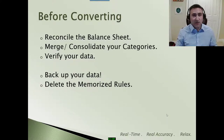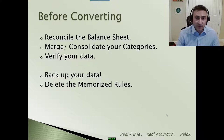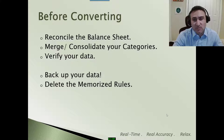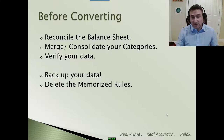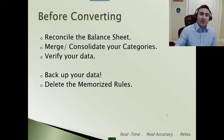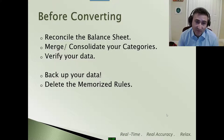If you are going to convert, and if you are one of those individuals or businesses that it does make sense for, here are a few things you should do before converting. First, reconcile your balance sheet — make it easier on yourself to compare and look for any mistakes that did not go well in the conversion. Make sure you merge and consolidate as many of your categories in Quicken as possible so that you have a nice clean file once it ports over, and verify your data. These are three best practices you should always employ with your Quicken file. Make sure you're backing up and make sure you are using the backed-up version, not your original copy.